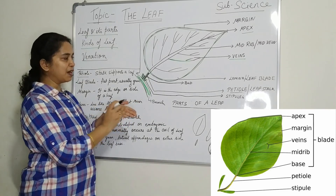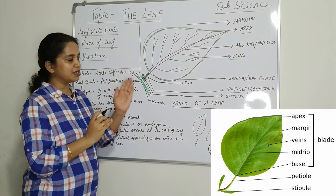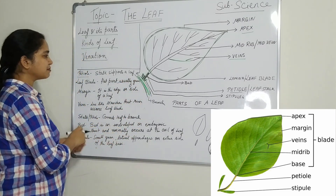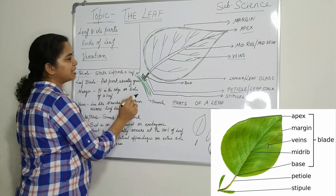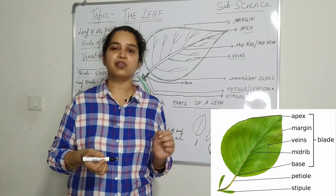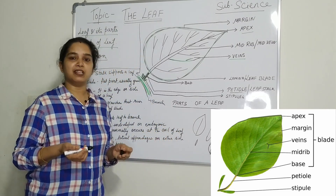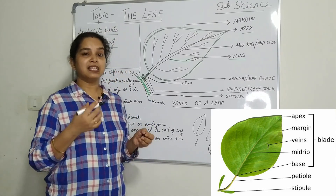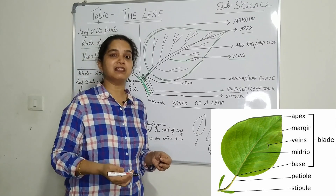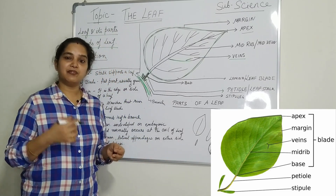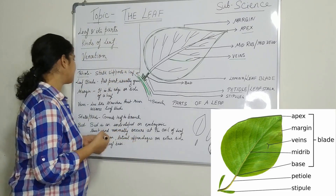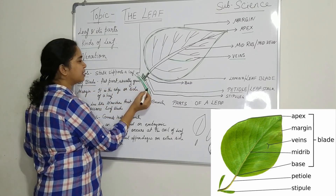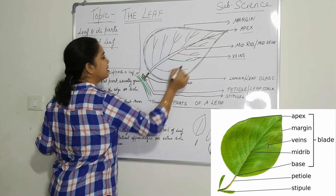The next structure is the leaf blade. The whole upper portion of the leaf is called the leaf blade — that is the flat part, usually green. The leaf is generally green in color due to the presence of chlorophyll, the pigment that makes it green. This chlorophyll traps the sunlight and converts light energy into chemical energy.